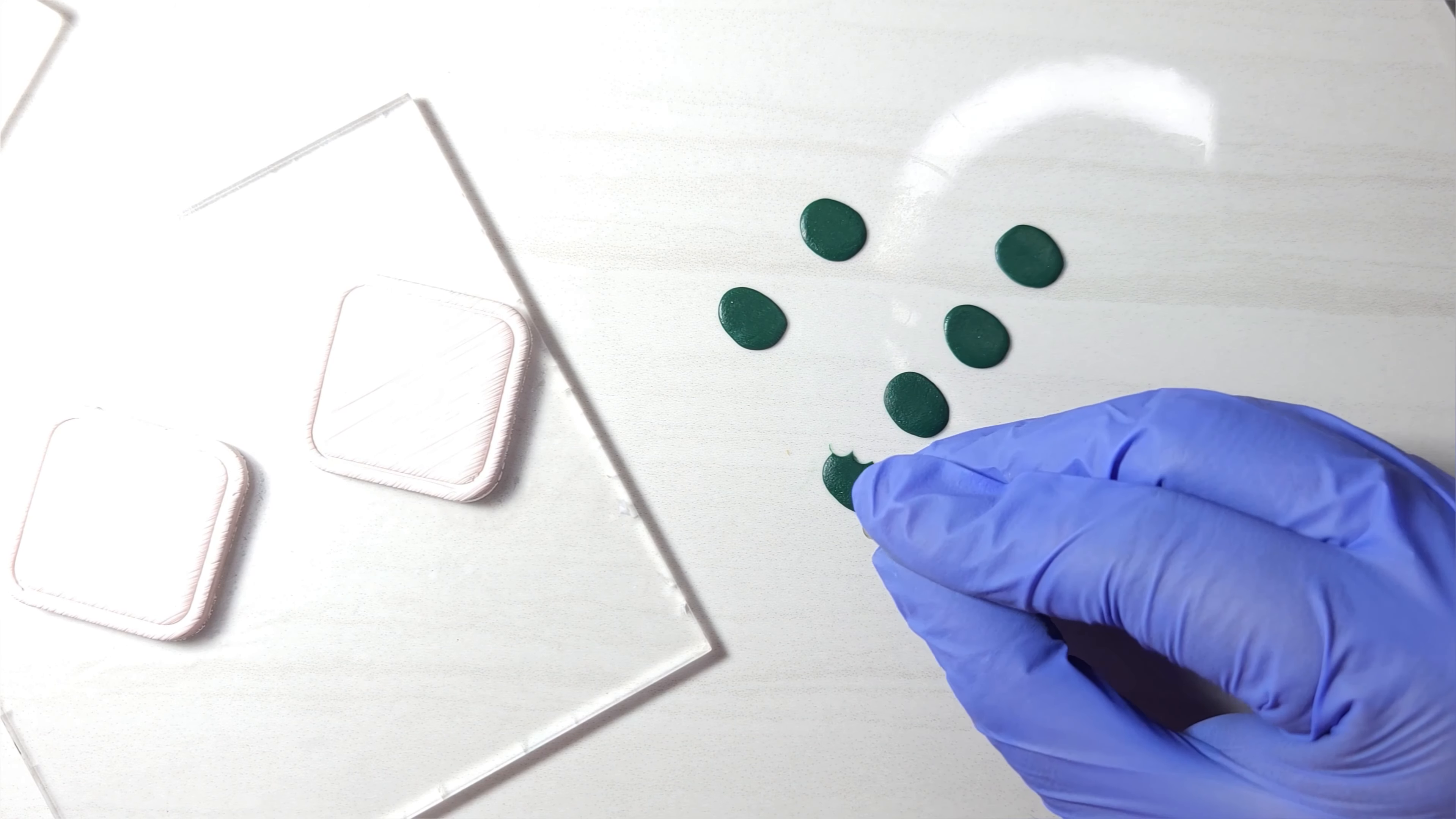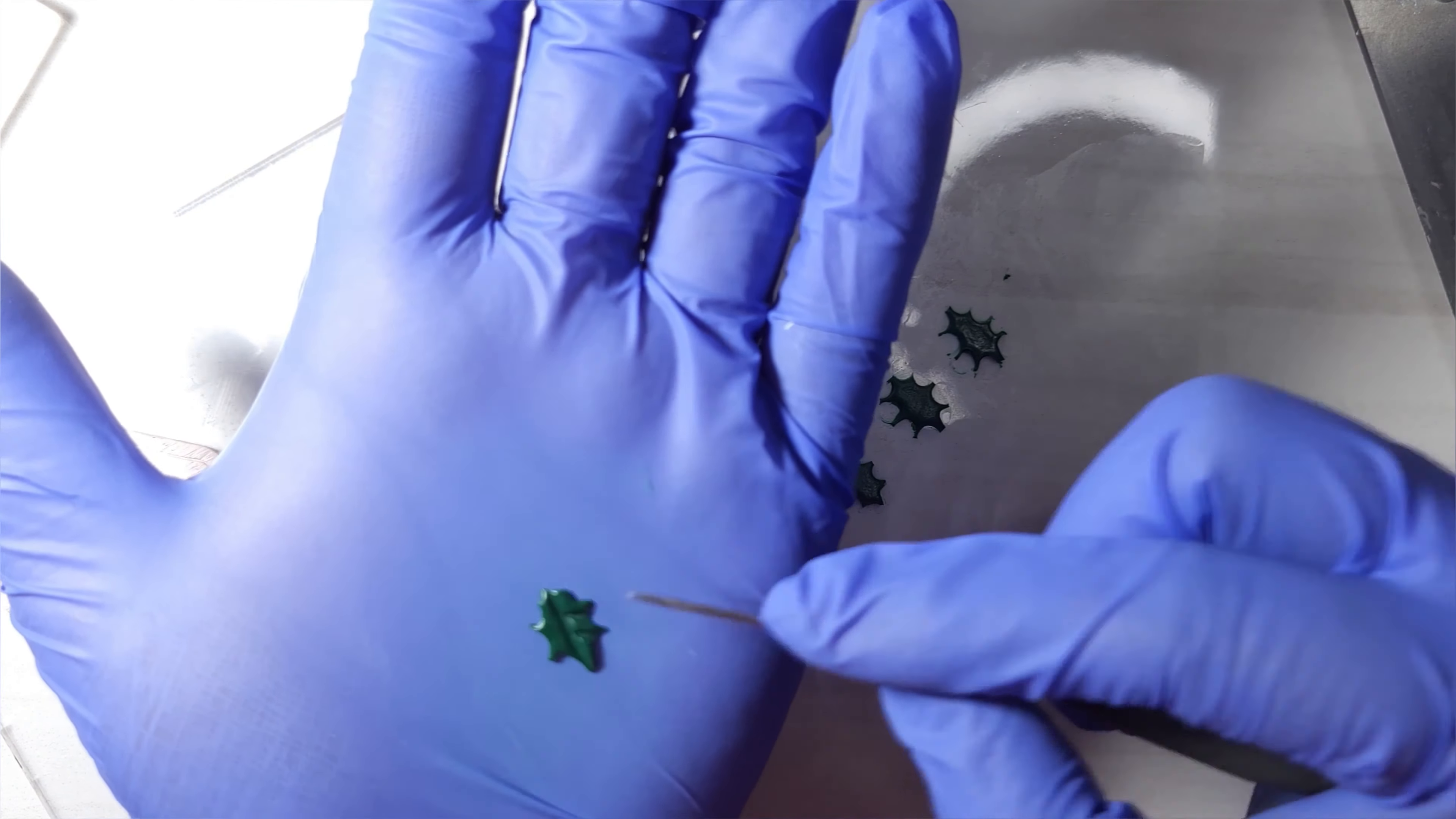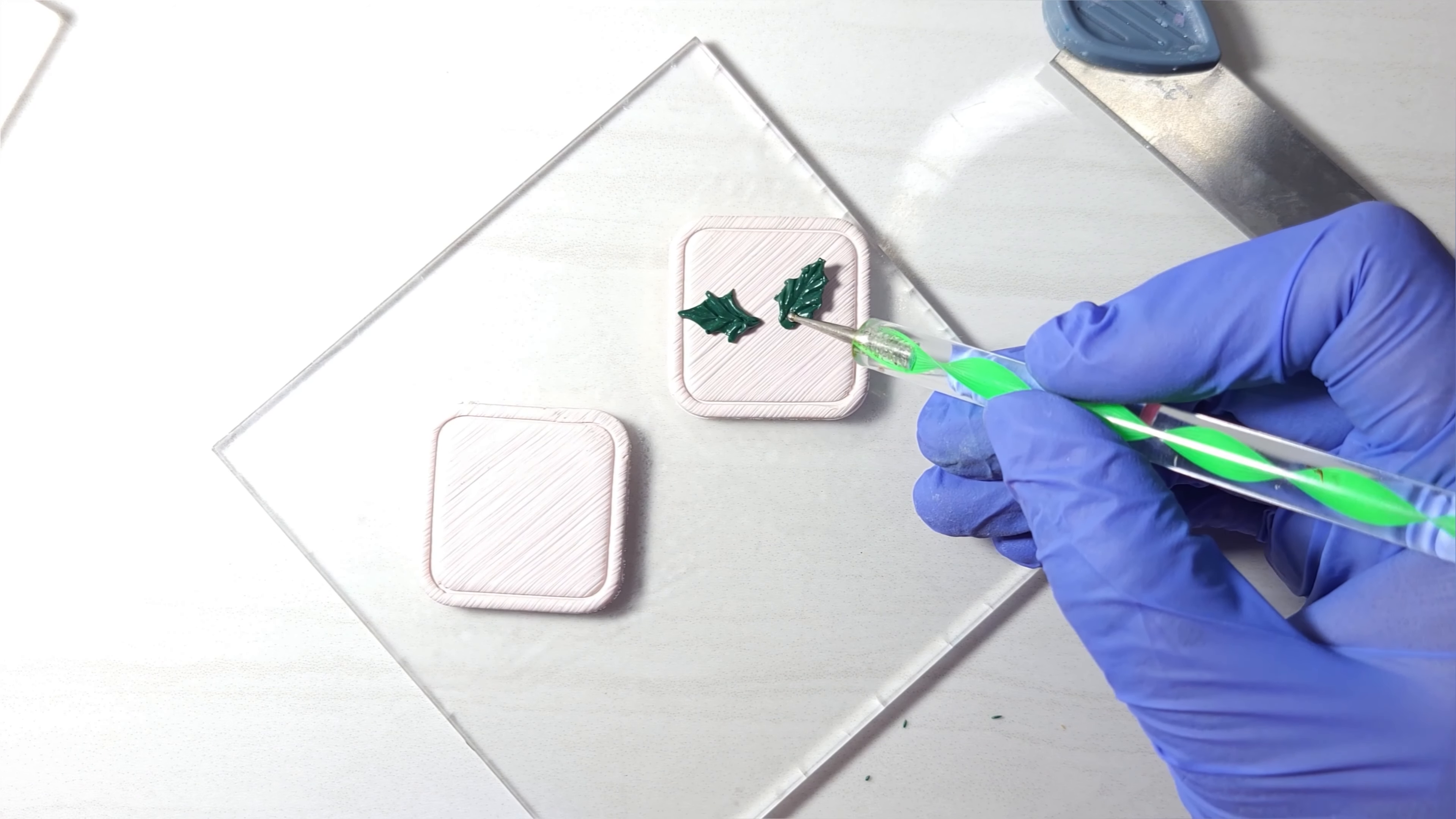Use a micro round cutter to make prickly holly leaves. Detail each leaf with a needle. Place the leaves on the base as per your design.